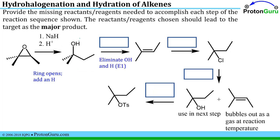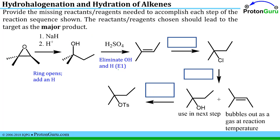The second step requires eliminating the OH from one carbon and one hydrogen from the adjacent carbon to form a double bond — that's an E1 or E2 reaction. Remember that E2 doesn't work with alcohols; you need an acid to activate the OH to be a good leaving group. It's the E1 reaction that does this, and sulfuric acid accomplishes E1 from an alcohol.